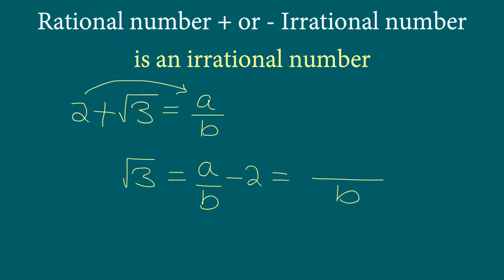When we simplify, we get (a minus 2b) over b. Now a is an integer and b is an integer, so a minus 2b will be some sort of an integer.